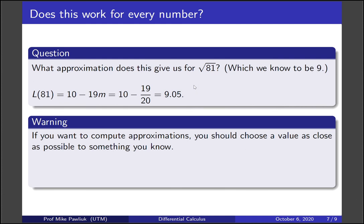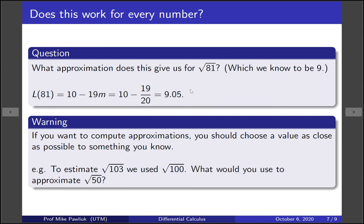But now a little bit of a warning you can already see that there's a bit of an error here. So if you want to compute approximations you should choose a value as close as possible to something you know. For example to estimate the square root of 103 we used the square root of 100. What would you use to approximate the square root of 50? I'll let you think about that.